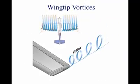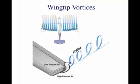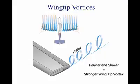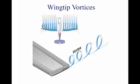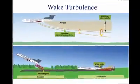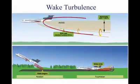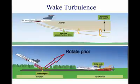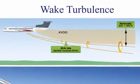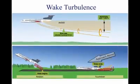Wingtip vortices are caused when the high pressure below the wing attempts to rejoin the low pressure air around the wingtip, causing a downward and outward vortex. The heavier and slower the aircraft, the greater the angle of attack, and the stronger the wingtip vortices. Wingtip vortices lead to a potentially hazardous condition called wake turbulence. To avoid wake turbulence: avoid flying through another aircraft's flight path; rotate prior to the point at which the preceding aircraft rotated when taking off behind another aircraft; and avoid following another aircraft on a similar flight path at an altitude within a thousand feet. Approach the runway above a preceding aircraft's path when landing behind another aircraft.